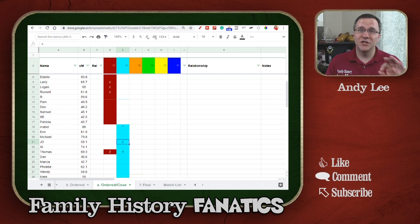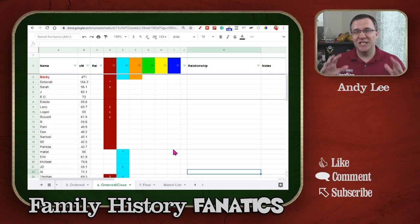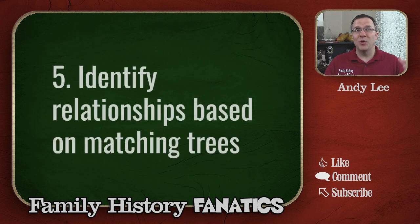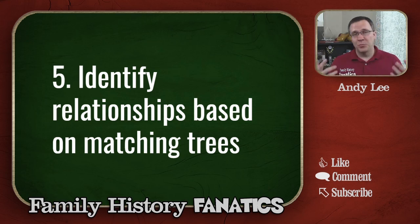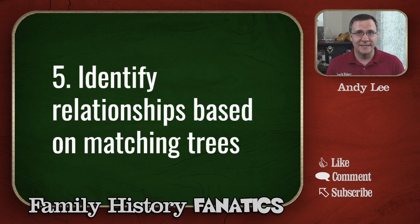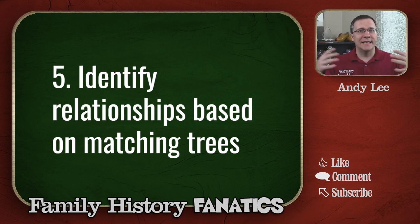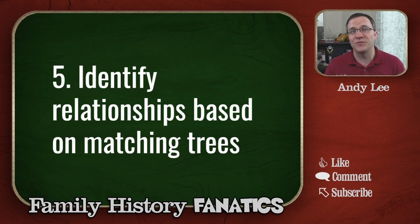So far all the information used to fill in this chart has come just from the DNA. Now it's time to go find more information — specifically to identify who the common ancestors might be. People who put trees online are a great resource as the first step. For second and third cousins you're only looking back to grandparents or great-grandparents, so most of that information is probably accurate because it is very recent and based on personal knowledge of the people creating the tree.